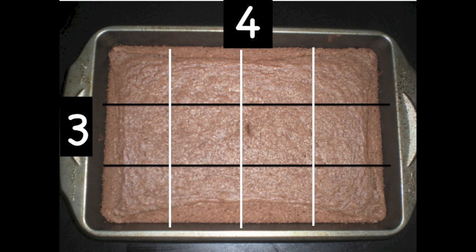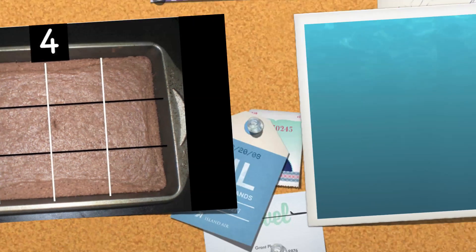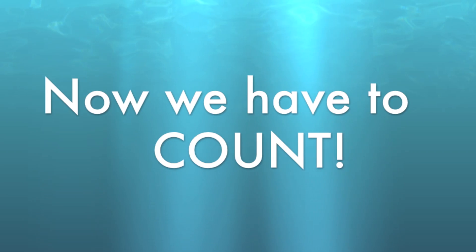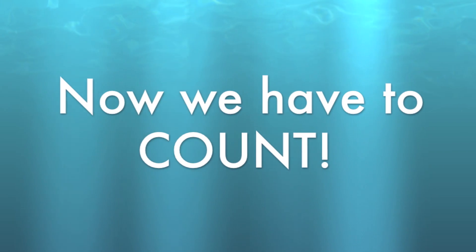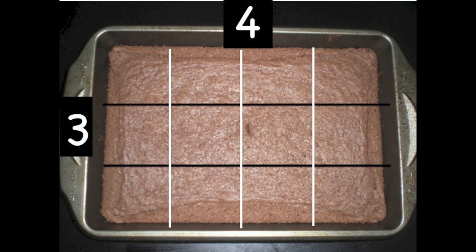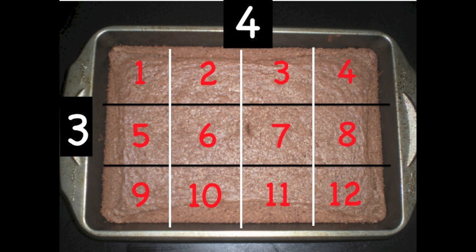Great job! I think that all of these pieces look like squares, and they all look like they're the exact same size. Now we have to count — how many pieces of brownie do we have now? Let's count together: 1, 2, 3, 4, 5, 6, 7, 8, 9, 10, 11, 12. We divided our brownie into 12 equal, same-sized square pieces.